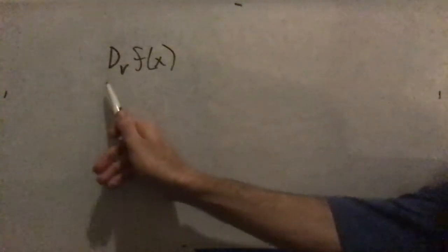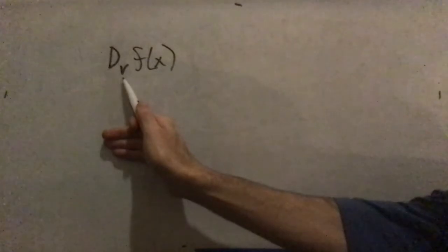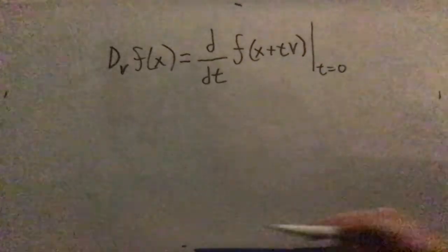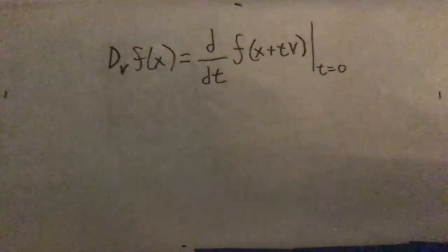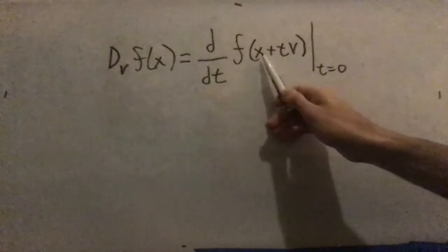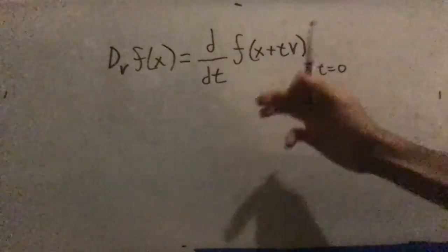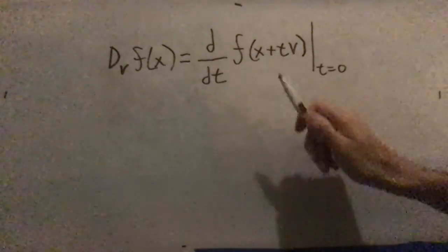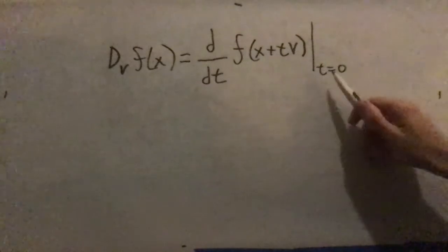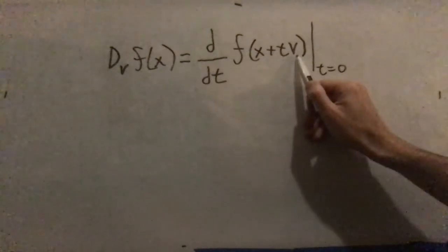Before we get to the gradient, we could first look at the directional derivative in some direction v. The directional derivative of f in the direction v can be derived by introducing a parameter t, and starting to add t times v to the input at x. As we increase t, the input travels along v. We look at the instantaneous rate of change with respect to t right at the very beginning when t equals 0 — that's when we first begin to depart the point x moving in the direction of v.